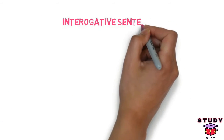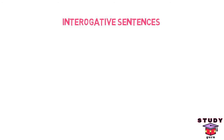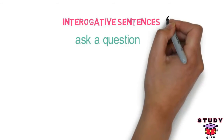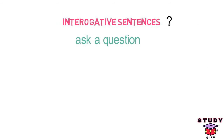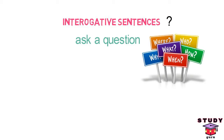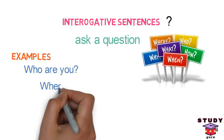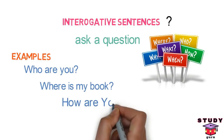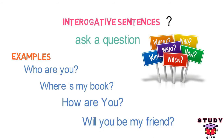Interrogative sentences. Interrogative sentences are used to ask a question. They end with a question mark. We use who, what, when, where, why, and how — which are W5H words — when asking a question. For example, 'Who are you?' 'How are you?' 'Will you be my friend?' So, whenever you are asking a question, you are using an interrogative sentence.